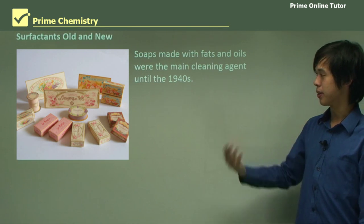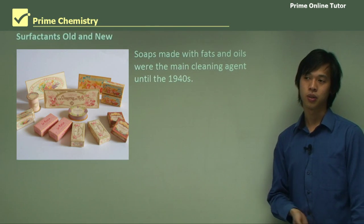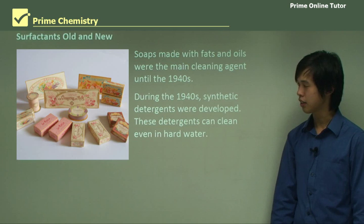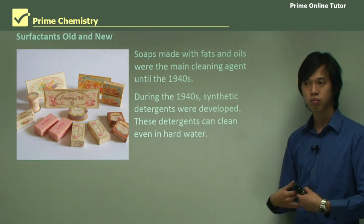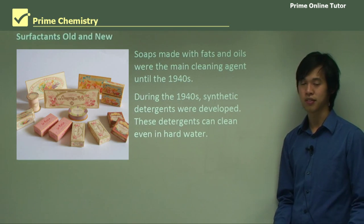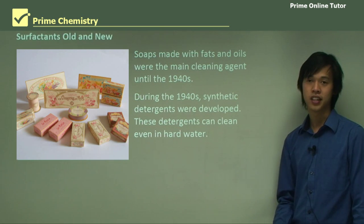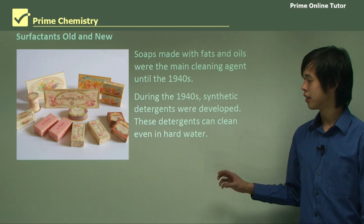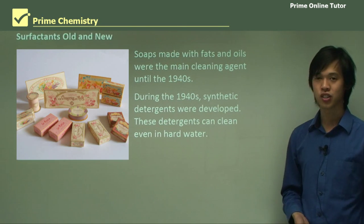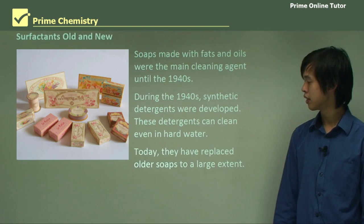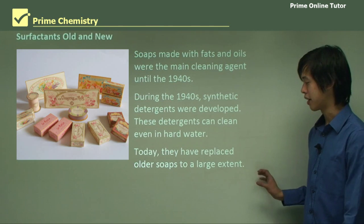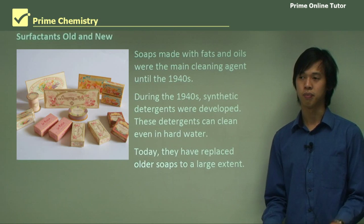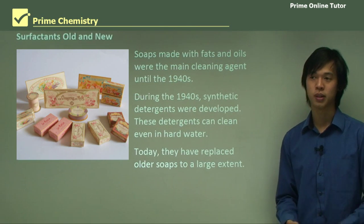Surfactants, old and new. Soaps made with fats and oils were the main cleaning agent until the 1940s. Using animal fats or vegetable oils to make soap was the major process until about the 1940s. During the 1940s, synthetic detergents were developed when oil became a useful thing that people knew how to deal with, and we started developing all sorts of different chemicals from it. These detergents can clean even in hard water. The major disadvantage of soap was that if our water supply was very hard, we couldn't use soap, whereas with these new detergents we found we could. Today, synthetic detergents have replaced older soaps to a pretty large extent. We don't really see soap being used outside of maybe some specialty areas like personal hygiene. We see synthetic detergents being used as cleaning agents pretty much everywhere.